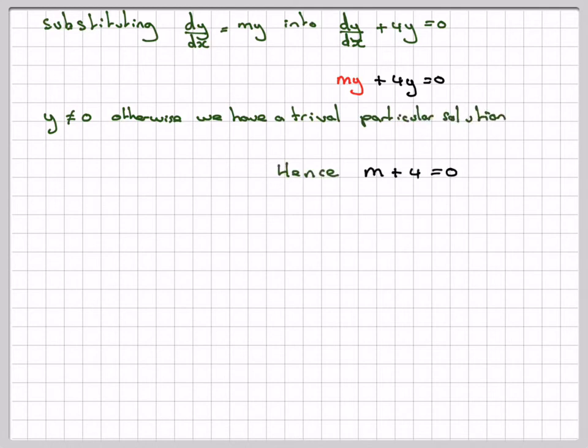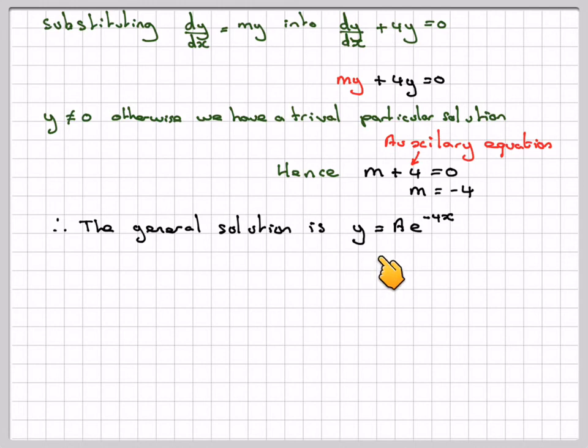Hence we end up with this idea that m plus 4 is equal to 0. Now this is known as the auxiliary equation. We can solve that by getting m is equal to minus 4 and therefore the general solution of this type of equation will be y is equal to ae to the minus 4x.